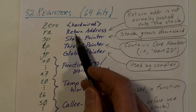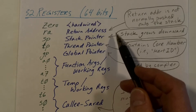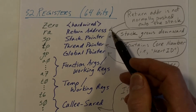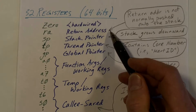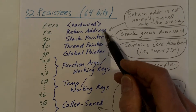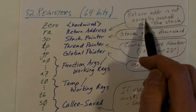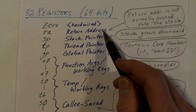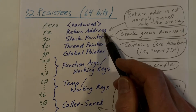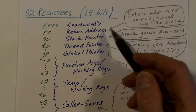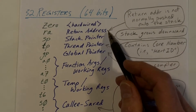RA is the return address. The RISC-V uses a clever system for function calls and returns. When a call is made, the return address is saved in this register rather than being pushed onto the stack. The return instruction simply copies the value from the return address register back into the PC. So for many functions, we don't need to access main memory at all.